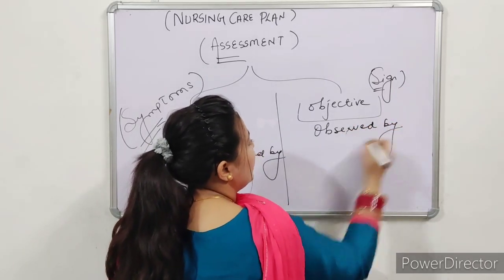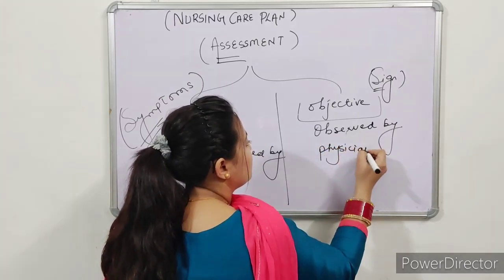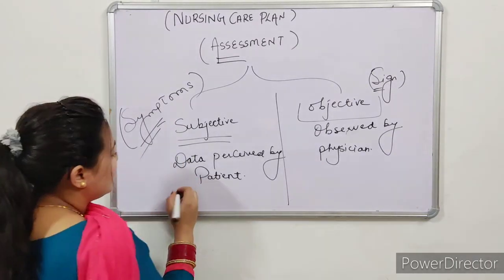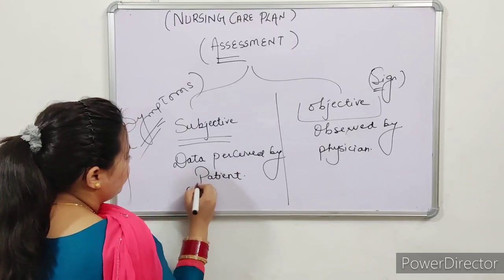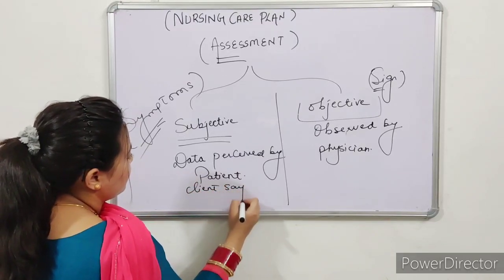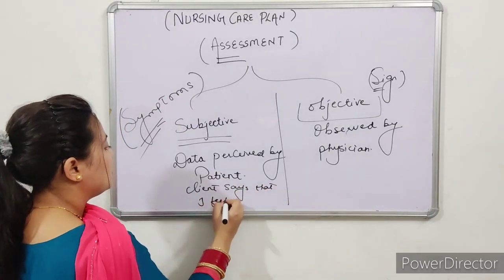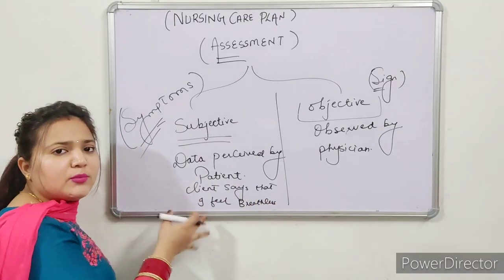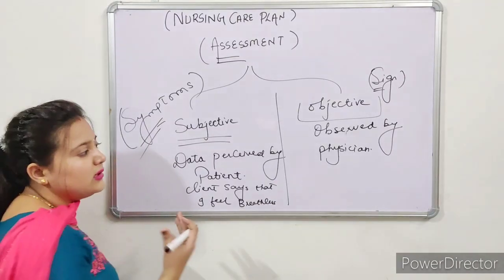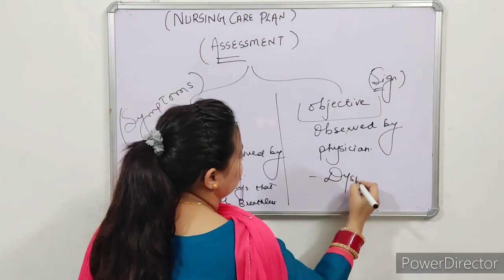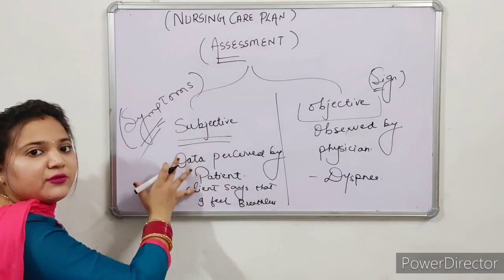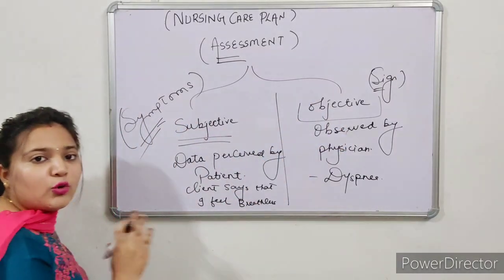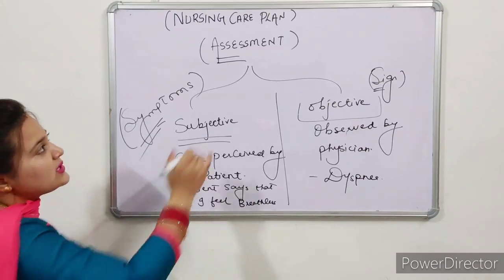Objective data is observed by the physician. For example, if the client has breathing difficulty, the client says 'I feel breathless' — that is subjective, what the client has said. The sign is what the nurse or physician observes. I hope that is clear. The next step: first step is assessment, second step is nursing diagnosis.